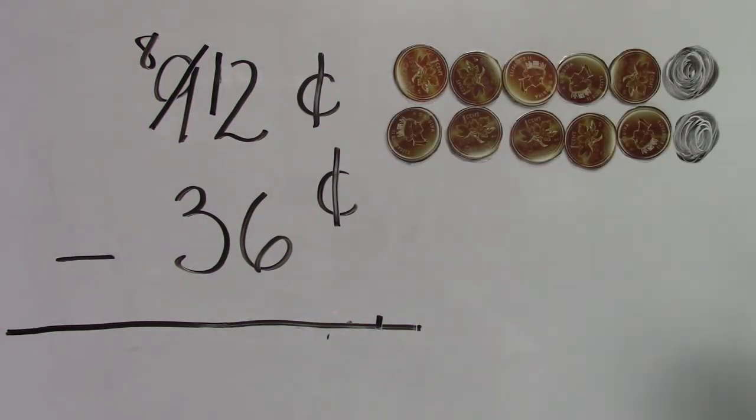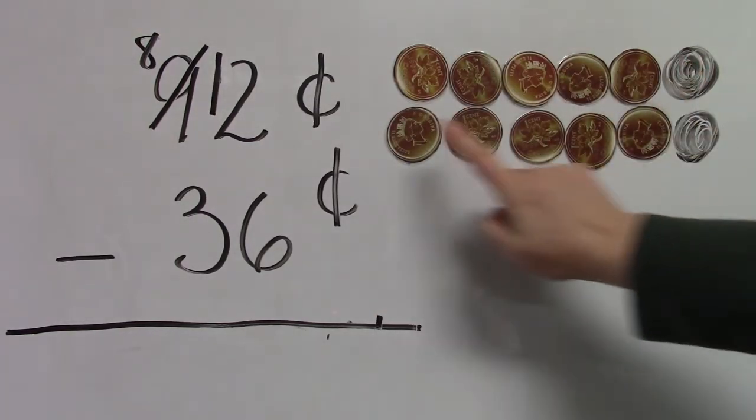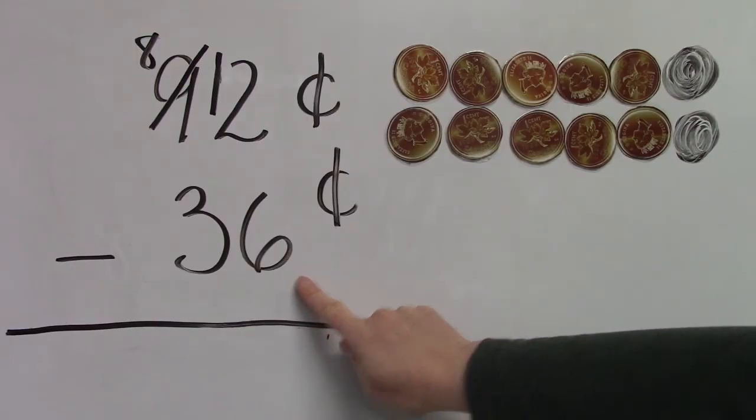Oh dear. I ran out of pennies. One, two, three, four, five, six, seven, eight, nine, ten, eleven, twelve. I ran out of pennies so I had to draw some. If we have twelve pennies and we take away six...